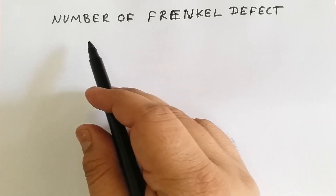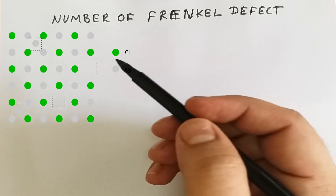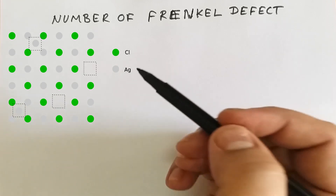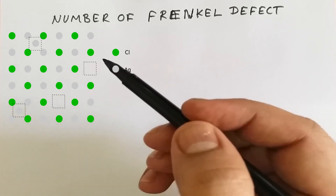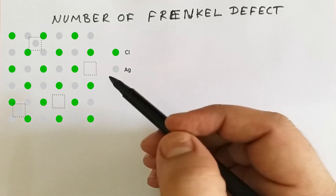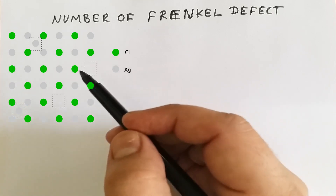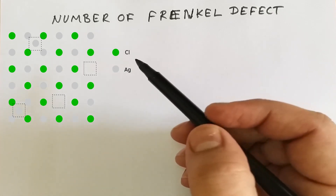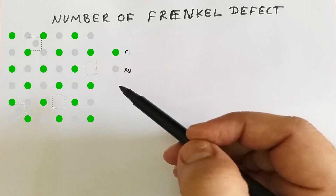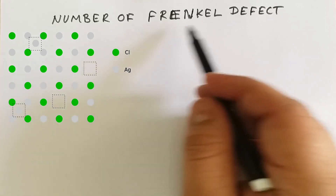Welcome! Today we are going to discuss the number of Frenkel defects. In the case of Frenkel defect, as you can see in the image, we have taken the example of silver chloride crystal. Frenkel defect basically arises when a cation of a crystal leaves its position and sits in any interstitial space. Cations are smaller compared to anions, and because of their small size they can sit in the interstitial space very easily. The gray dots are our cations and the green dots are our anions, and the silver cation sits in any interstitial space — the defect produced is known as the Frenkel defect.